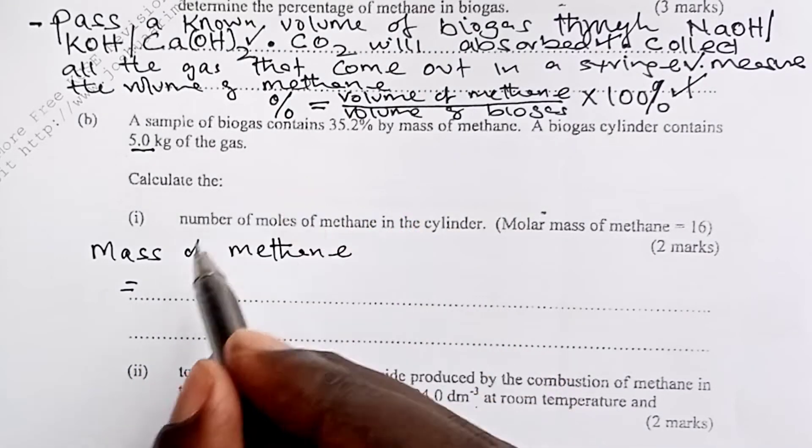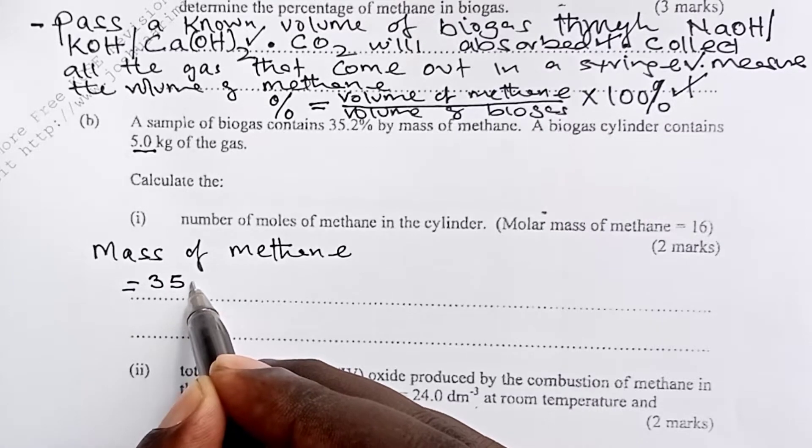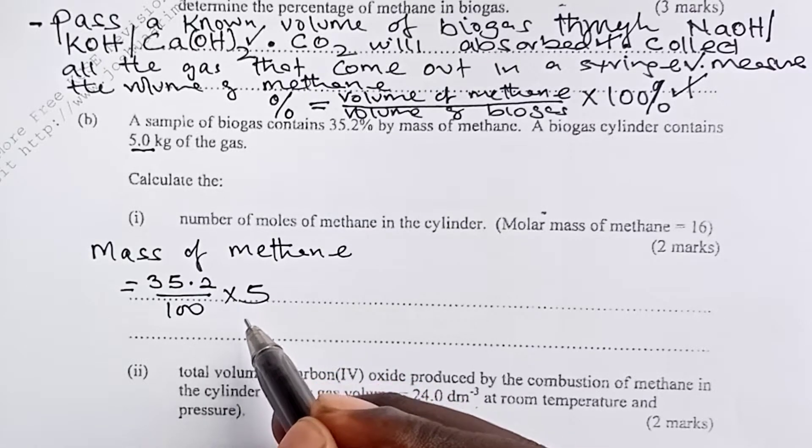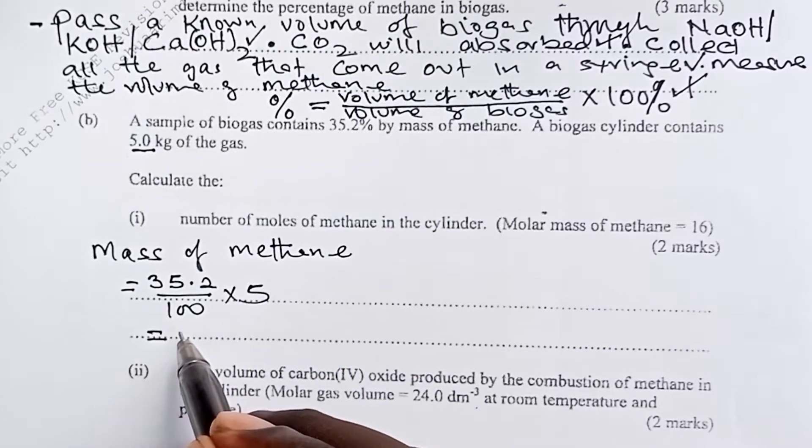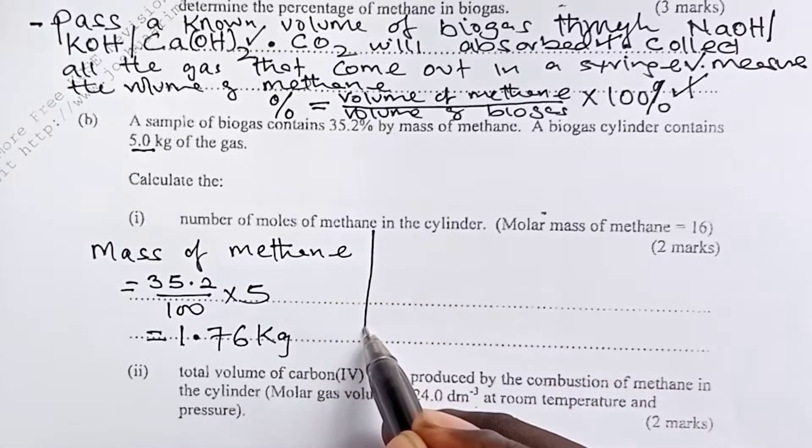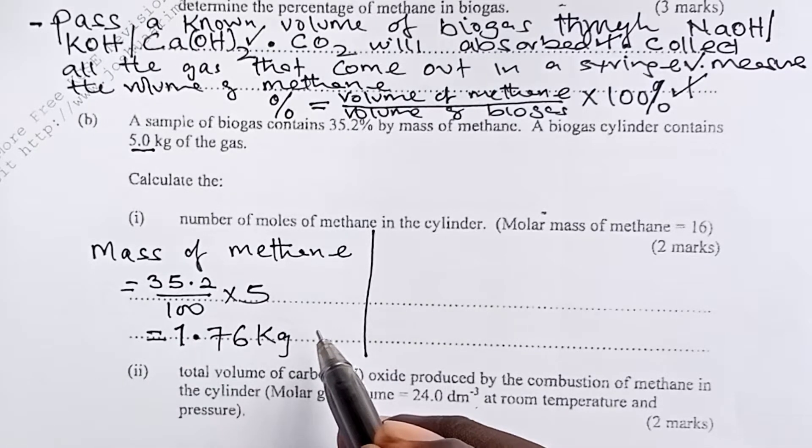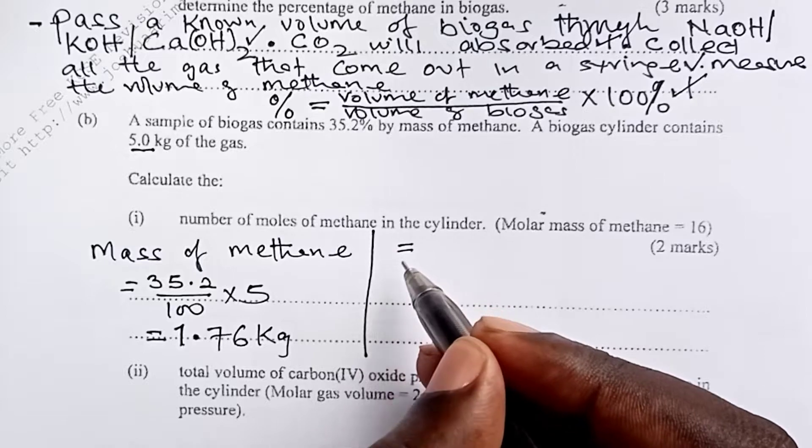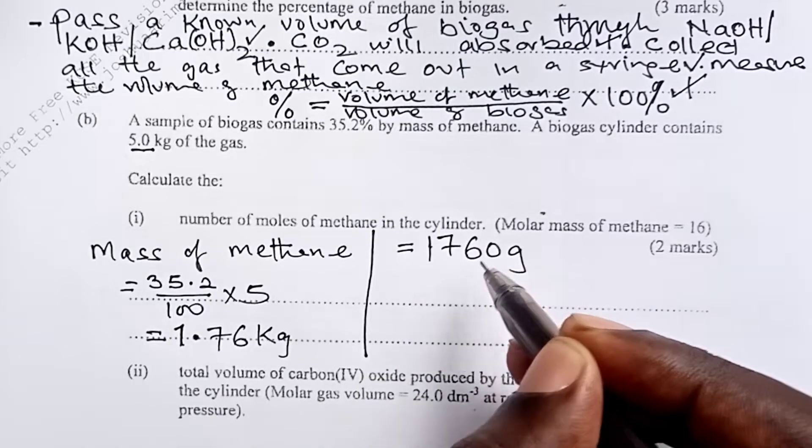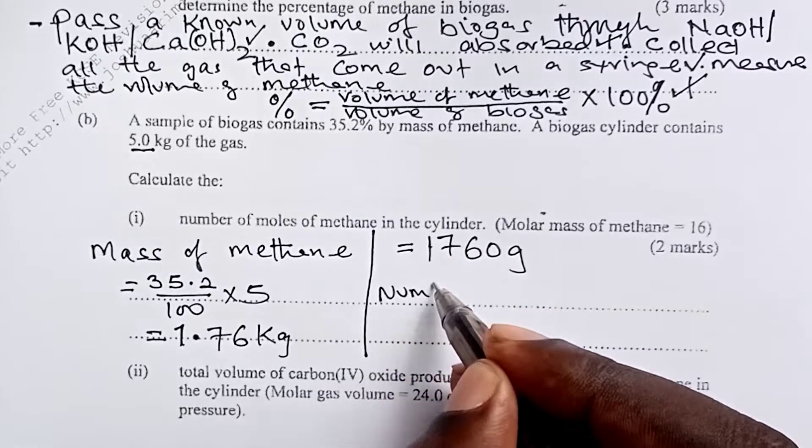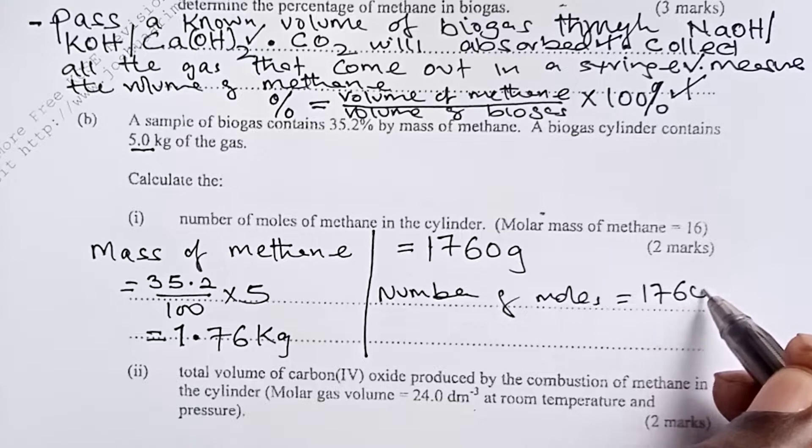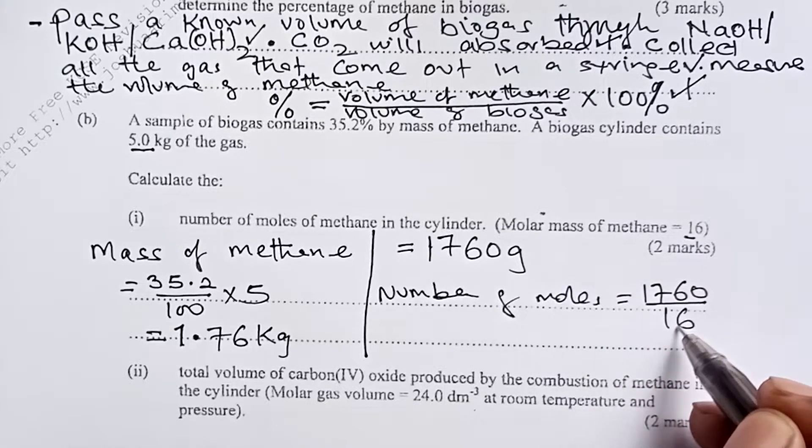And this you do by doing the percentage by mass, 35.2% times the kilograms that we had. And that gives us 1.76 kilograms. For us to be able to get number of moles, we need these in grams. So when you change 1.76 kilograms into grams, we get 1760 grams. And now, number of moles would be given by mass in grams divided by the molar mass, which has been given as 16. And the answer here becomes 110 moles of methane.